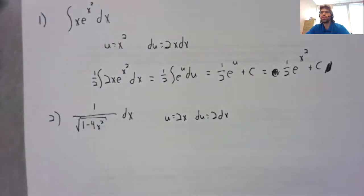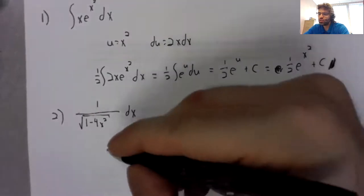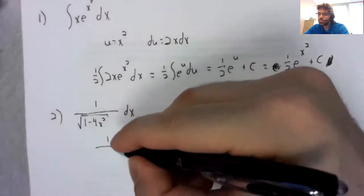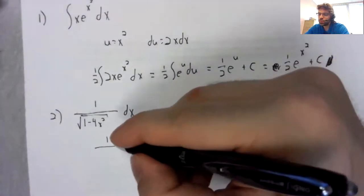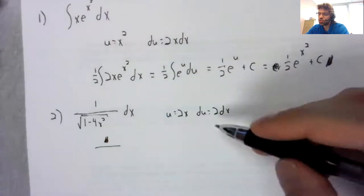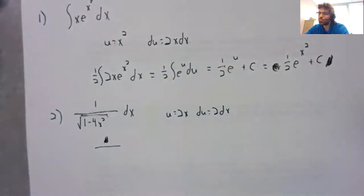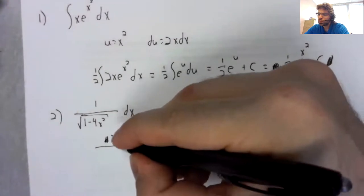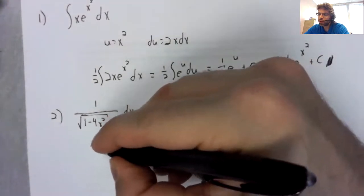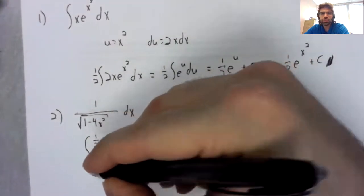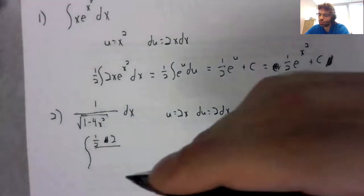if we let u be 2x, du be 2dx, then we would—well, to get the two, we'd need to put in a one-half, just like in the previous problem.